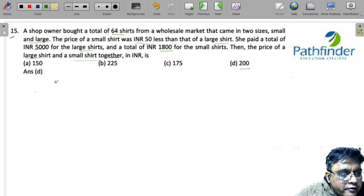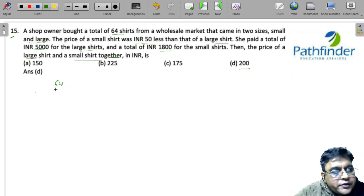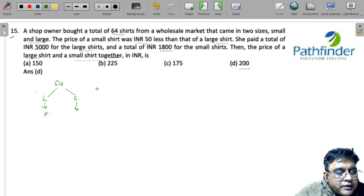So there is a shopkeeper who has a total of 64 shirts, of which some are large and some are small. The price of large shirt is P, then the price of small shirt is given to be 50 less, so we can take it as P minus 50. And if the number of large shirts is X, then 64 minus X should give us the number of small shirts.